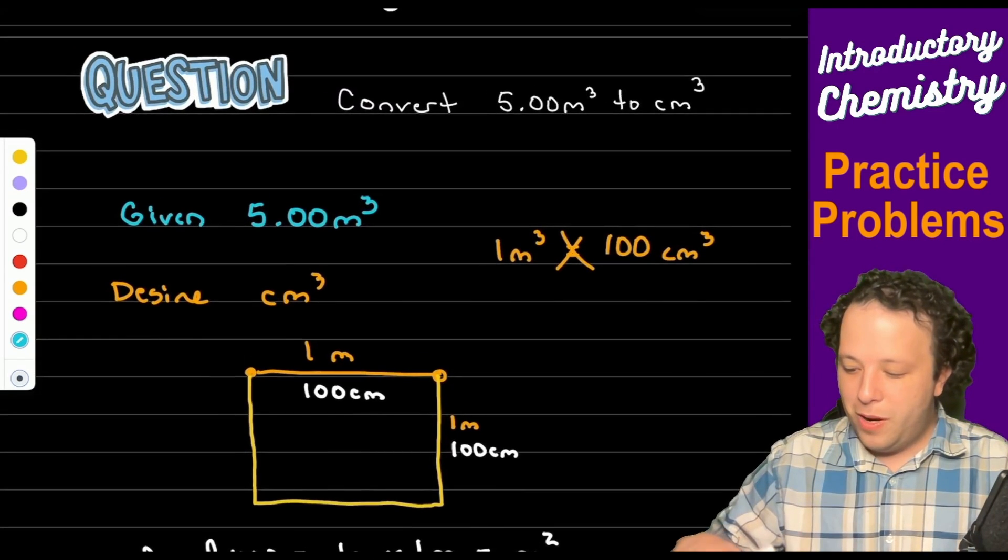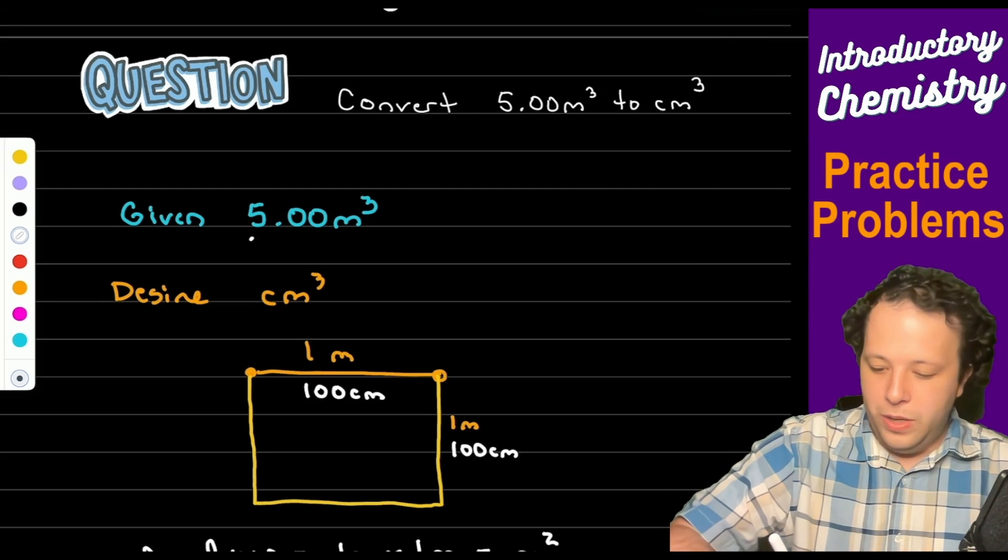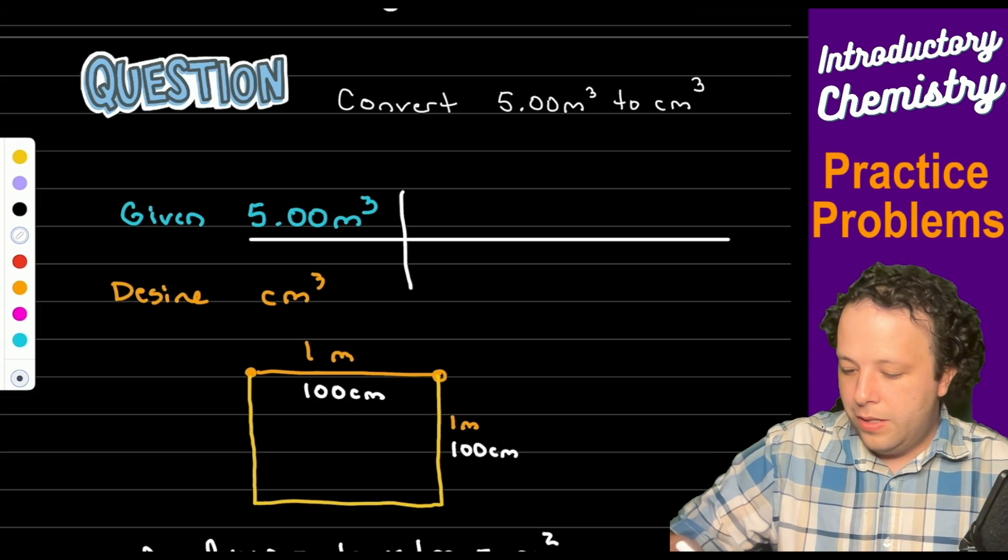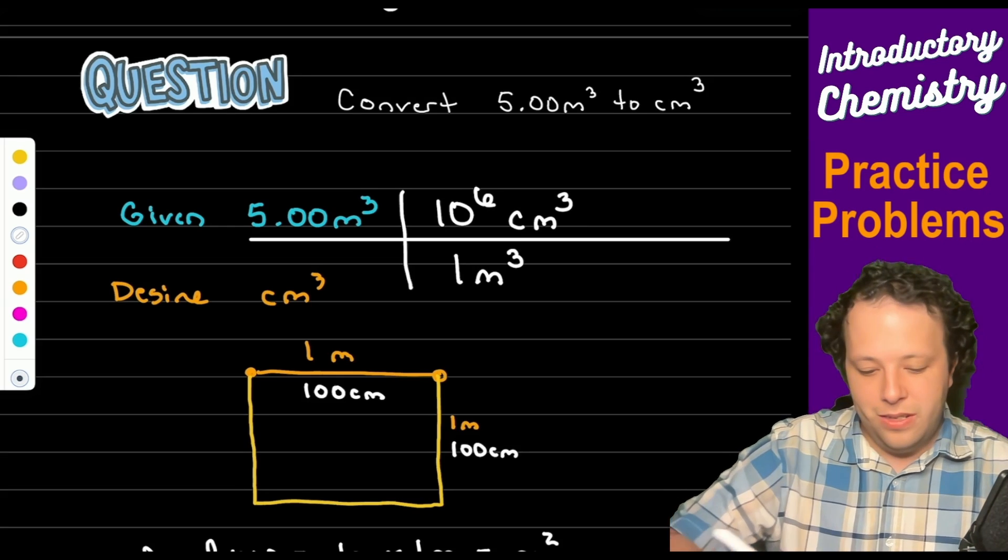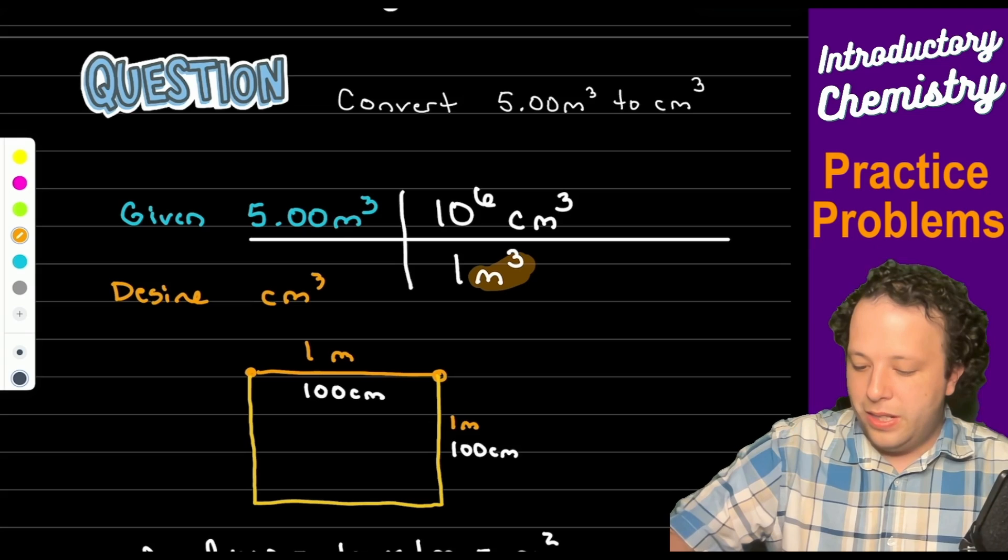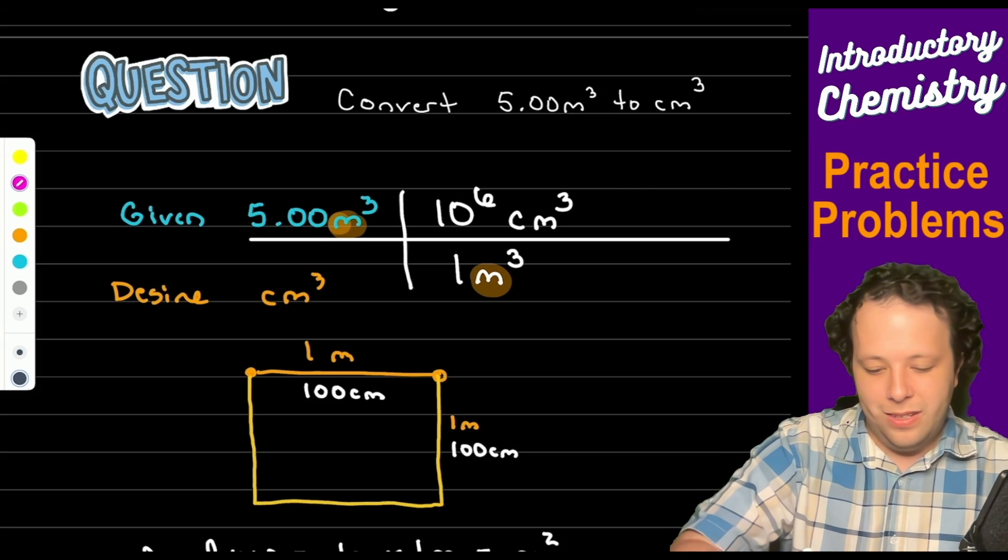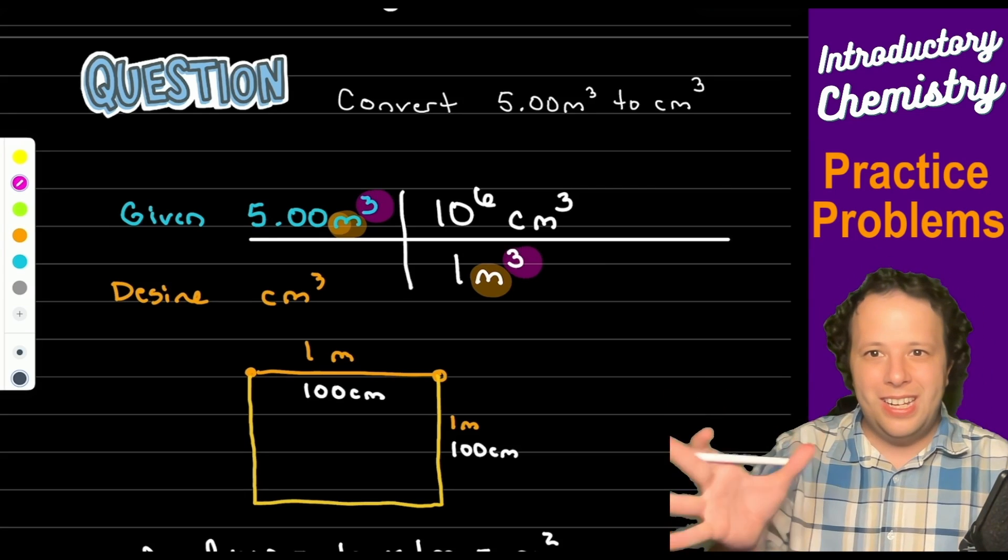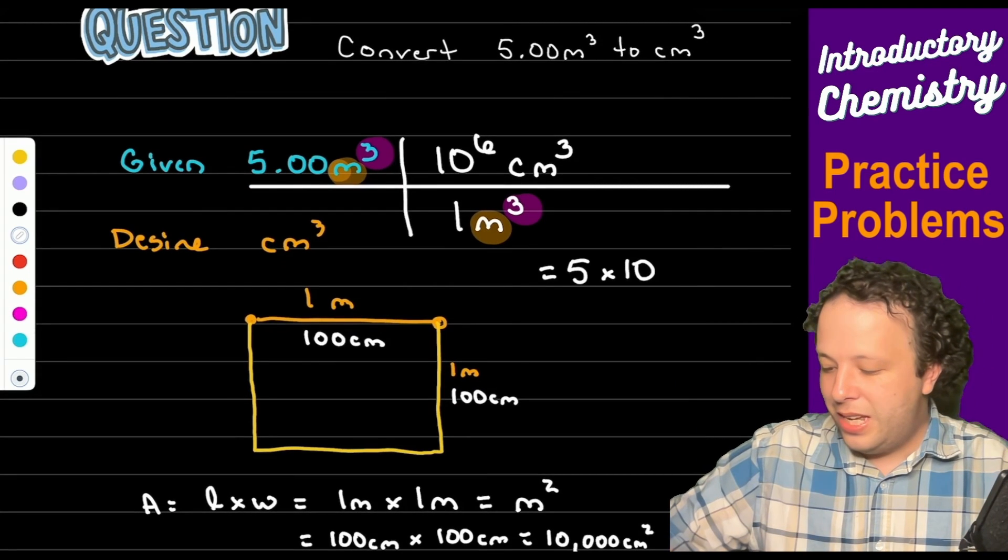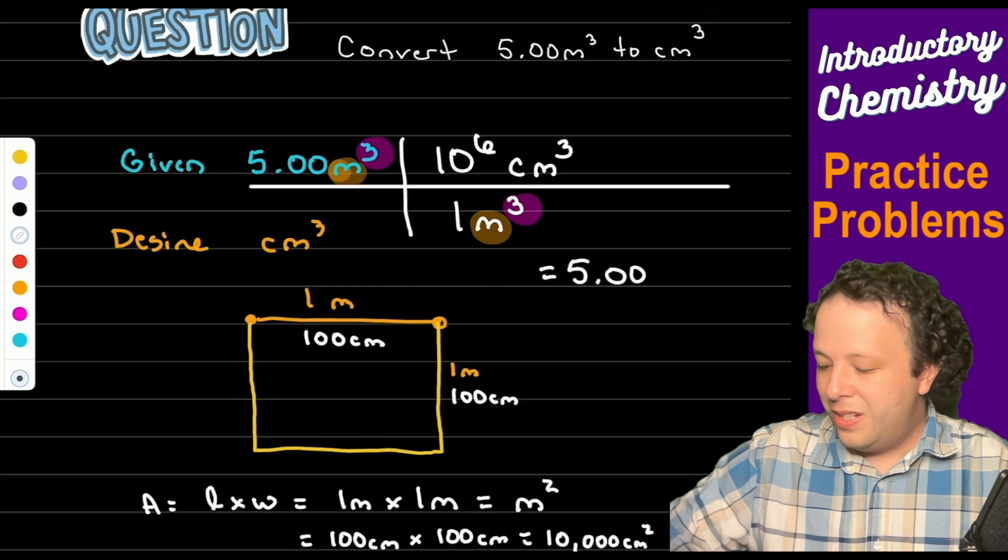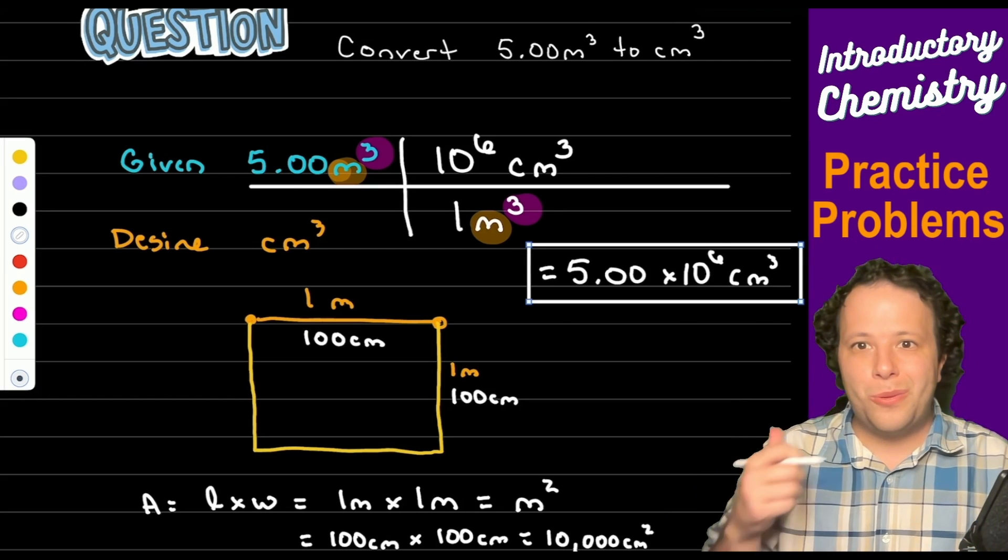So going back to our problem before, if I have five meters cubed, we can cancel that out. Being that we said that one meter cubed was equal to 10 to the 6 centimeter cubed. And we can now see that meters cubed cancels meters cubed. So what this makes our final answer to be is 5.00 times 10 to the 6 centimeter cubed. That is our answer. So that was a lot of work for one little problem.